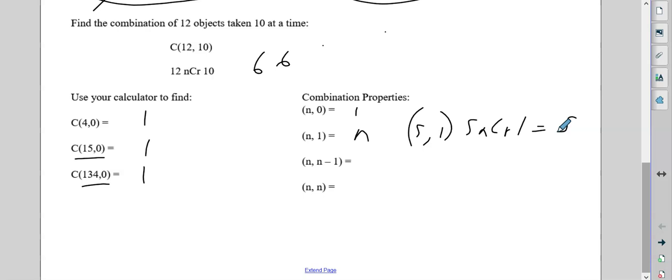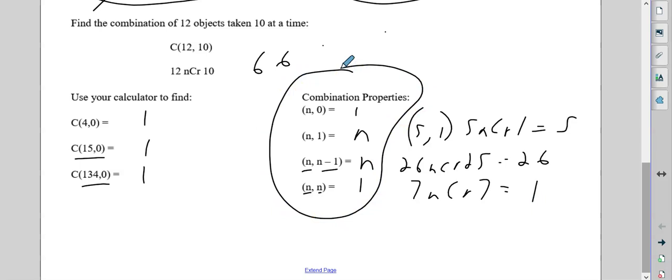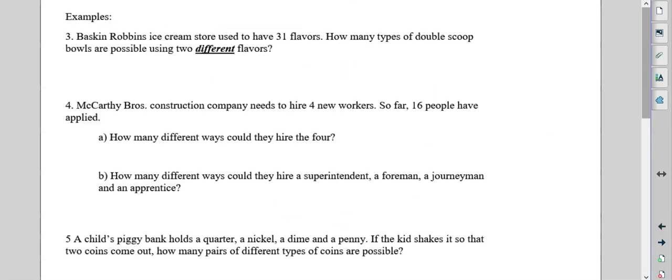If it's a number and the next number is 1 less, then it's going to end up being the number. So in other words, if you had 26 NCR 25, if the number is 1 less, that's going to end up being 26. And if the number is the same here, it ends up being 1. So if you had 7 NCR 7, that would give you 1. So these are properties to know as a reference. It saves you some calculation time.